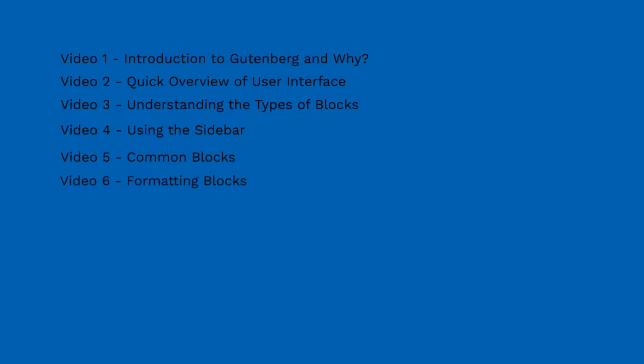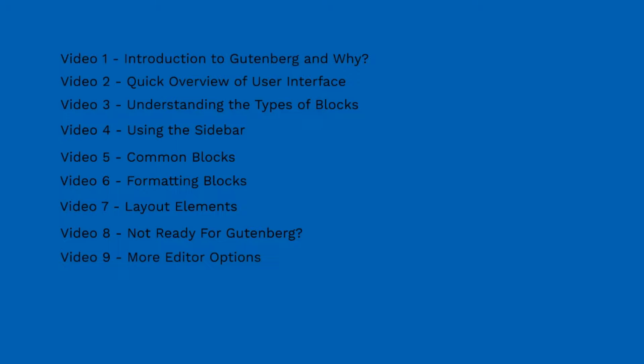Video number six will talk about formatting blocks. I'm breaking it up into simplified videos so I don't want to overwhelm you. Video number seven will cover layout elements, and video number eight will talk about what to do if you're not ready for Gutenberg — how to disable it and revert to the old classic editor, since a lot of people prefer going back. Video number nine covers more editor options.